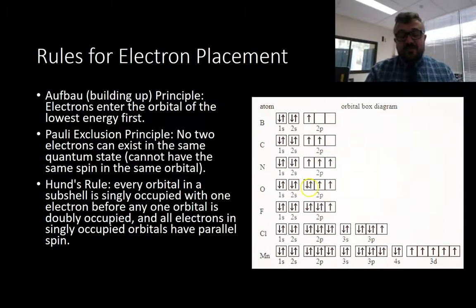If we go to oxygen, we go up, up, up, then down. With fluorine, up, up, up, down, down. We fill up with parallel spin before we start putting those with opposite spin in there as well. Those are the three rules that put us together.